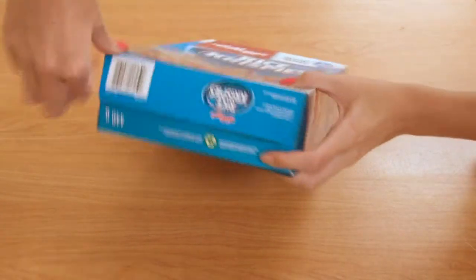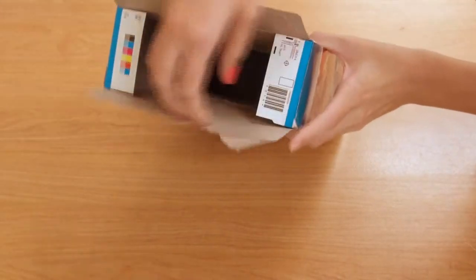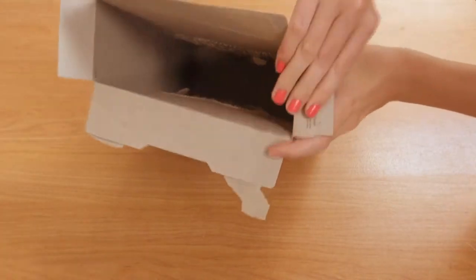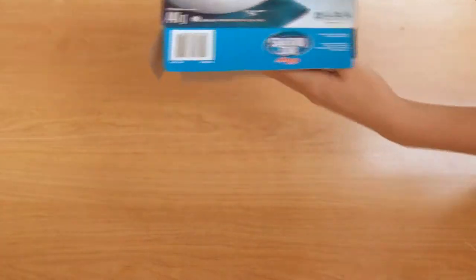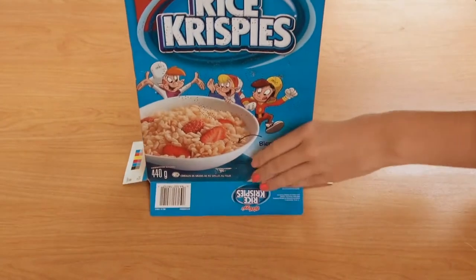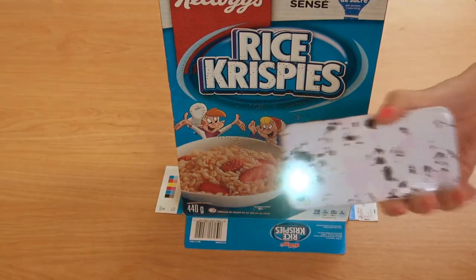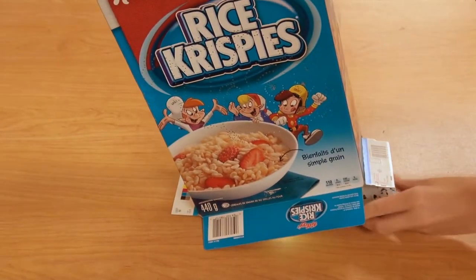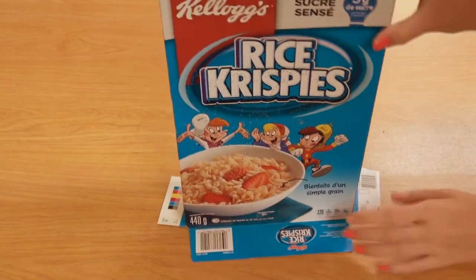Open the bottom of the cereal box so it can sit up on its own. Find a flashlight and place it inside of your cereal box and turn off the lights, and admire your new creation.